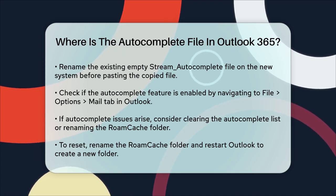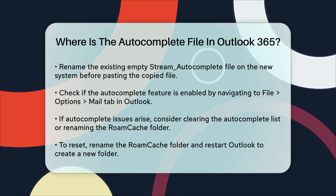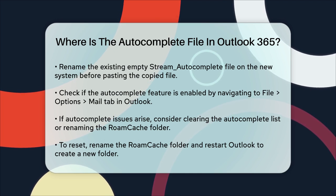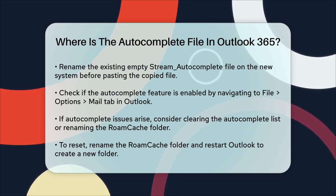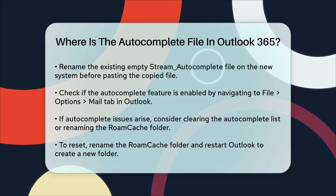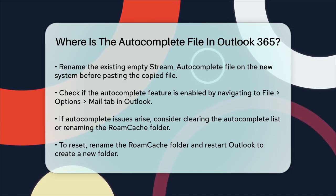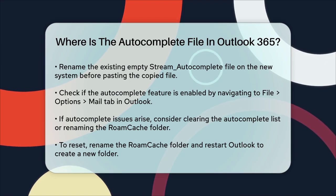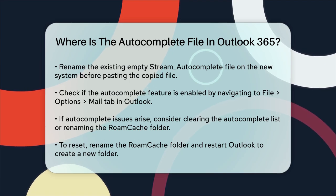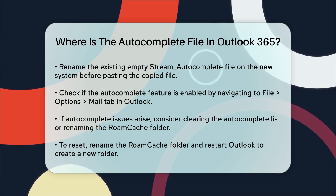In some cases, you might need to clear the autocomplete list or rename the RoamCache folder to reset it. To do this, exit Outlook, find the RoamCache folder, right-click it, and rename it to something like Old RoamCache. When you restart Outlook, it will create a new RoamCache folder.